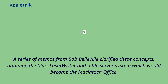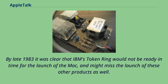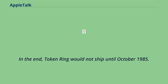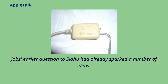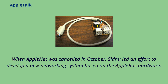By late 1983 it was clear that IBM's Token Ring would not be ready in time for the launch of the Mac, and might miss the launch of these other products as well. In the end, Token Ring would not ship until October 1985. Jobs' earlier question had already sparked a number of ideas. When AppleNet was cancelled in October, C2 led an effort to develop a new networking system based on the Apple Bus hardware.